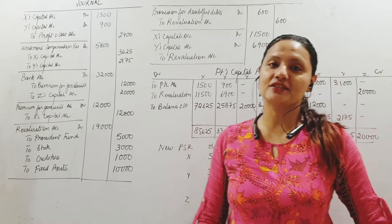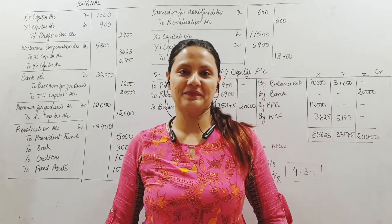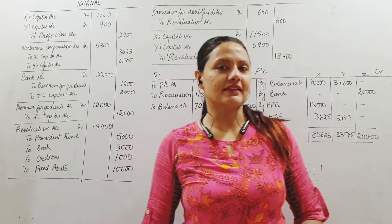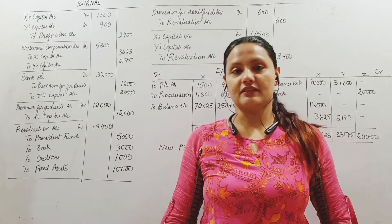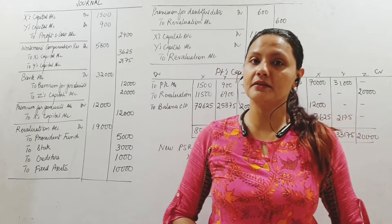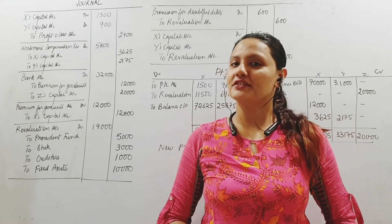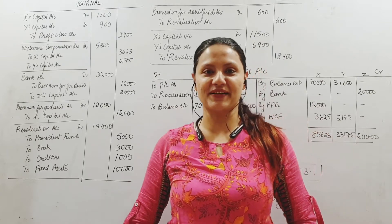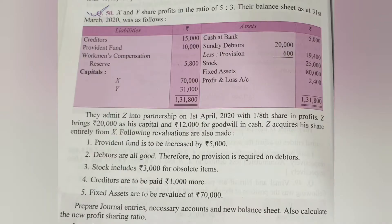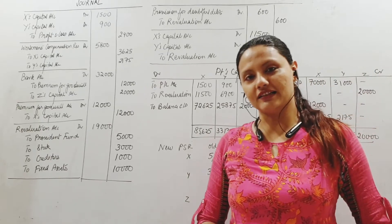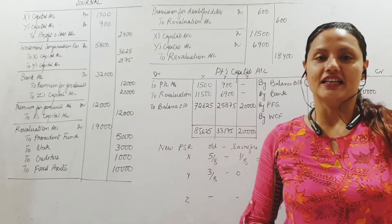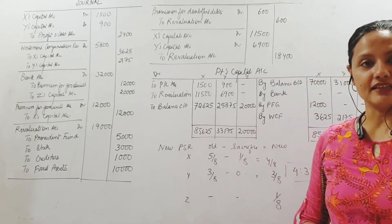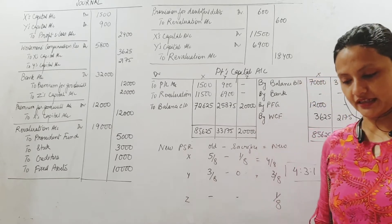Welcome back everyone to the next video in admission. Today we are going to take up a full length sum where we will do the journal entries, the partner's capital and balance sheet. This sum is taken from D.K. Goyal and this is sum number 50 in admission.